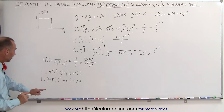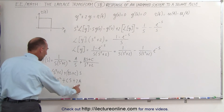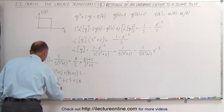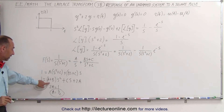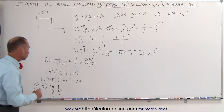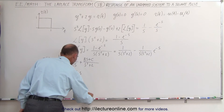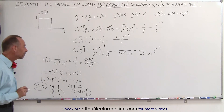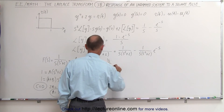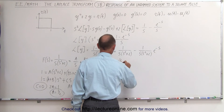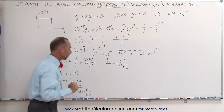From this we can see that c must equal zero because there's no s term on the left side. We can also say that 2a must equal one, which means a equals one half. Then a plus b must equal zero because there's no s squared term, so b equals minus a, which is minus one half. So the transfer function can now be written as one half over s minus one half times s over s squared plus two.